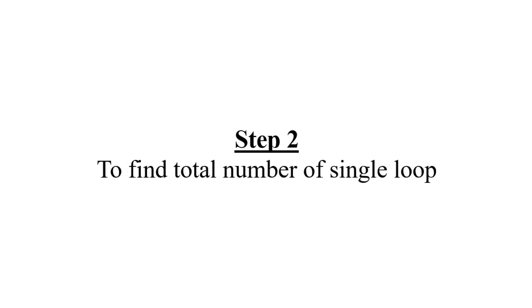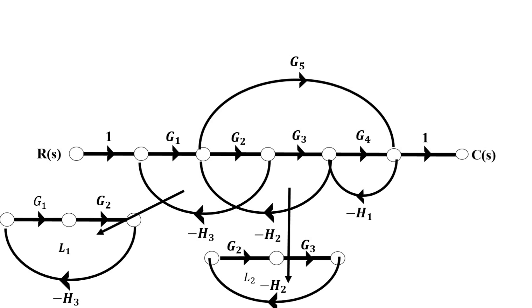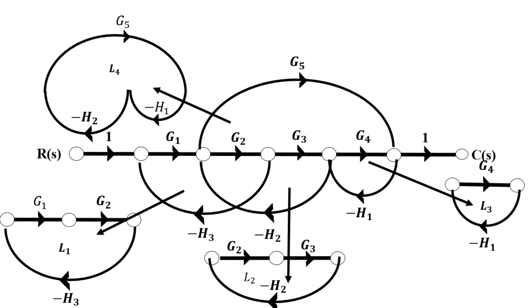Second step: to find the total number of single loops. We can define a single loop as a closed path. By looking at the graph, we can find four single loops or four separate loops. Here is the first loop, we will name it L1, second loop L2, third loop L3, and fourth loop L4.